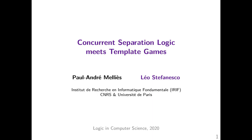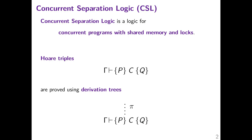Hi, thanks for watching this talk about concurrent separation logic and template games. First, what's concurrent separation logic? It's a program logic to prove concurrent programs which use memory and locks. As an extension of Hoare logic, it uses Hoare triples gamma, P, C, Q, which say that if the initial state satisfies precondition P, after program C has terminated, the final state satisfies Q. Such Hoare triples are proved using derivation trees, which are built using inference rules. In this talk, we will denote by the letter pi such trees.